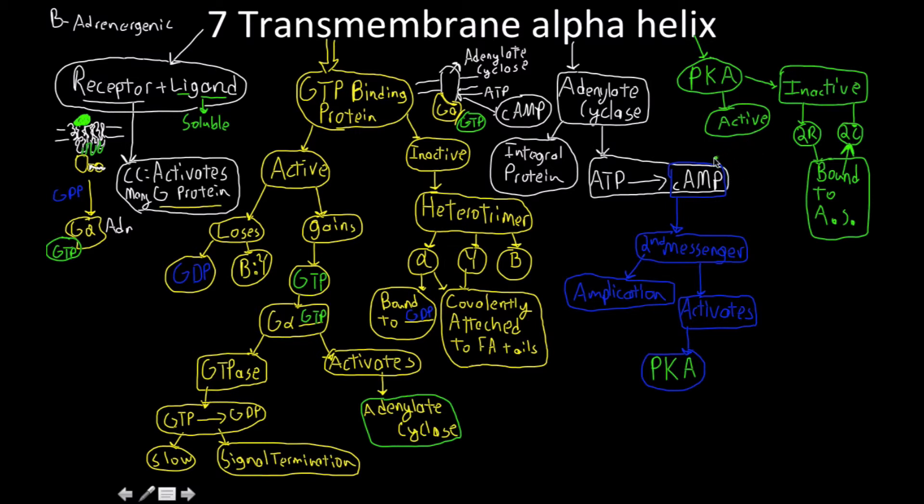In the active form, what has happened is we have had cyclic AMP has bound to its subunits on the two regulatory domains. The two regulatory domains are going to undergo a conformational change, which is going to ultimately have a release of the two catalytic domains.